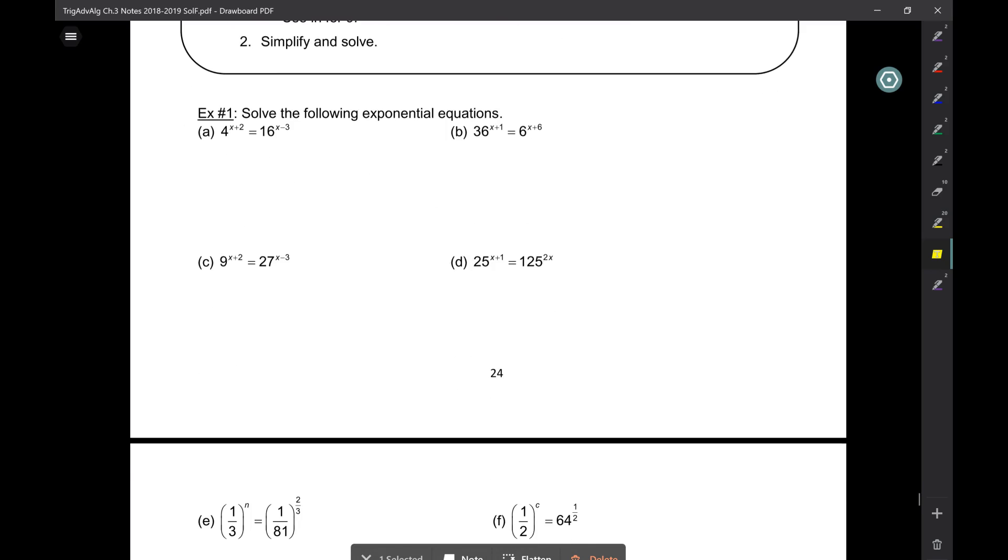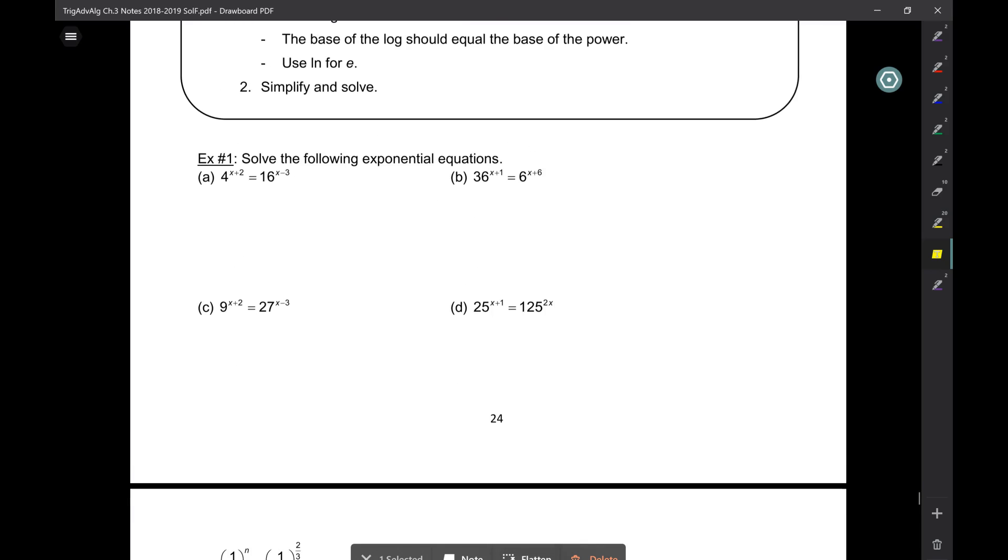Let's do some examples on what we just talked about. So take a look at this one here, A. Basically, you've got four to the power of some variable, and 16 to the power of some variable. One has a base of four, one has a base of 16. Now what you want to do is you want to make sure that both of them have the same base. You can make them both fours, you can make them both twos, minimize your work. If you can get away with just changing one, then just change the one.